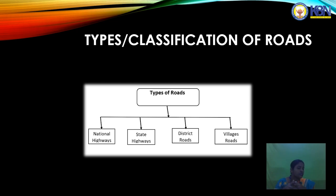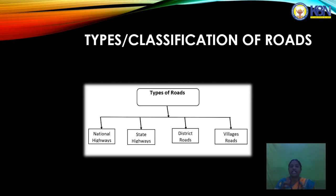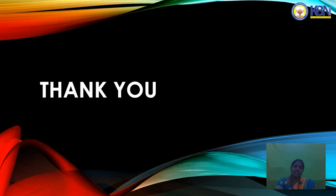Village roads are interconnected from one village to another village, connected with district roads, highways, and state highways. The four road classifications are interconnected: national highways connect with state highways, state highways connect with district roads, and district roads connect with village roads.